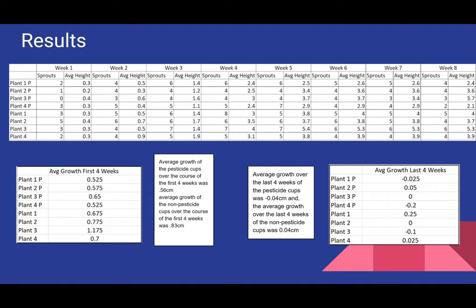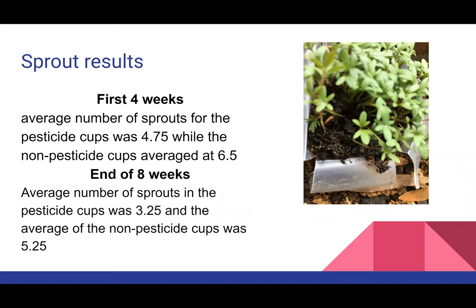The average growth of the pesticide cups over the last four weeks was negative 0.04 centimeters. The reason it's a negative number is because some sprouts actually died, and this was true for both the pesticide and non-pesticide cups. You can see from the chart that some sprouts died over time, which is why there was a negative number. The average growth of the non-pesticide cups in the last four weeks was 0.04 centimeters.